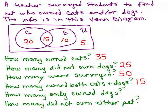How many only owned dogs — in other words, they didn't have a cat? Looking at the dog circle, the 15 in the middle also owned cats, so we only want the 10 over here — the people that only owned a dog. That would be 10. And how many did not own either pet? That means people not in either circle at all — that would be the 5 out here.